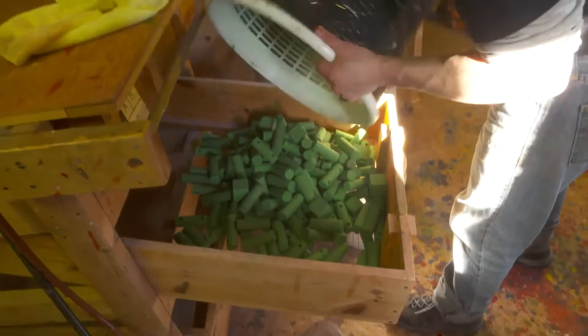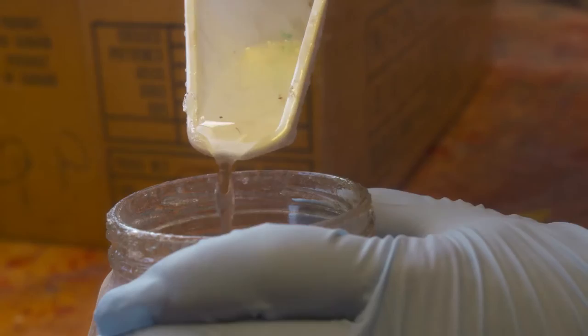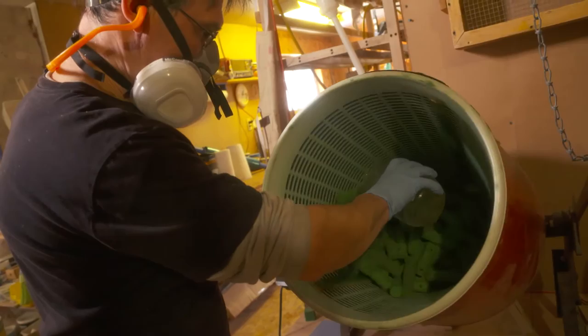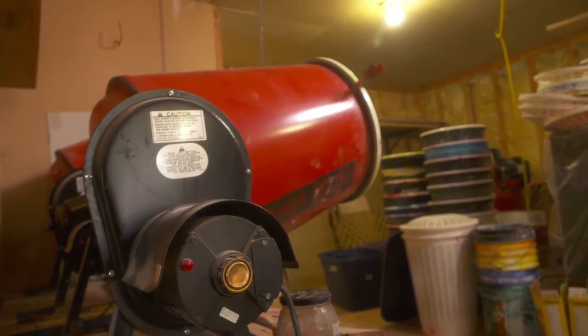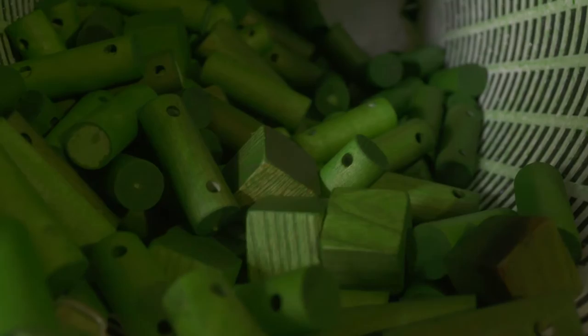After staining, it's time for lacquering. The lacquer is mixed. Then the toy parts are placed in the tumbler once again. The lacquer is poured in. The lid is secured and it will tumble for four hours. Then it's over to the drying racks for the night.